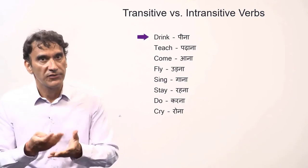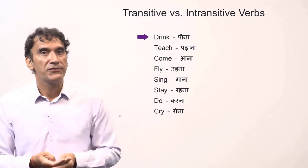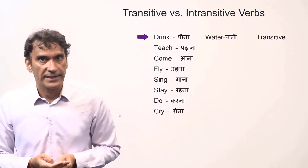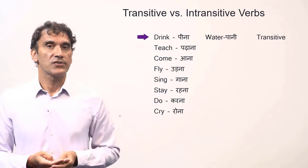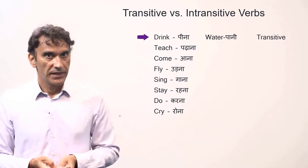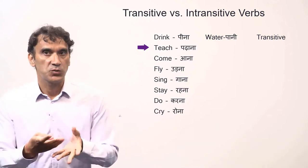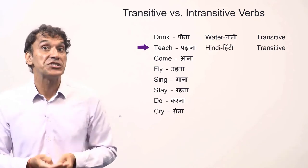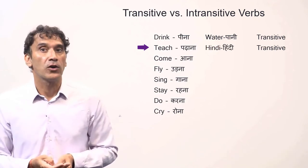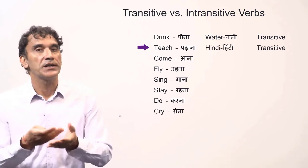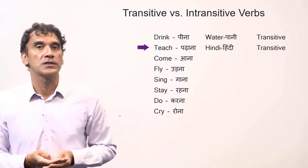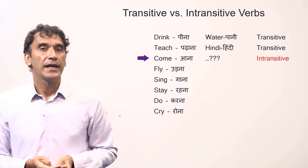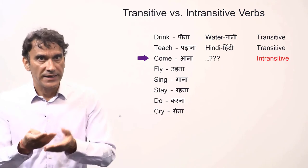Let's now take some verbs and find out whether they are transitive or intransitive. 'Drink' (peena) — 'drink what?' Drink milk, drink Coca-Cola, drink water. That means 'drink' can have a direct object, so 'drink' is a transitive verb. 'Teach' (padhana) — 'teach what?' Teach biology, teach maths, teach Hindi. The verb 'teach' can also have a direct object, so 'teach' is also a transitive verb.